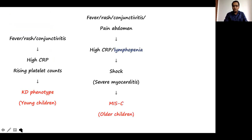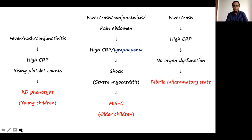The second presentation which emerged during this pandemic involved adolescent children who came with high-grade fevers, rashes, conjunctival injection, and some with severe abdominal pain. Consistently, all of them had high CRP and lymphopenia, and presented with shock due to severe myocarditis. This is the MIS-C that warrants urgent treatment. A third group had fevers and high CRPs but no organ dysfunction — a febrile inflammatory state that did not actually need any treatment.